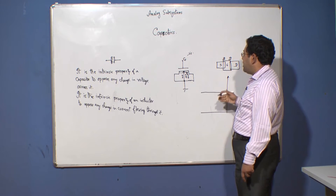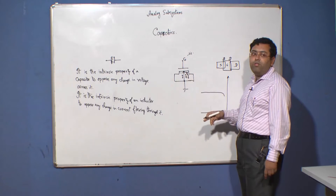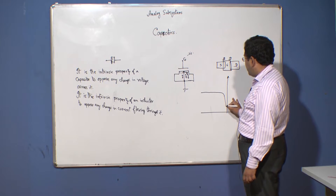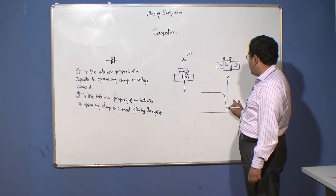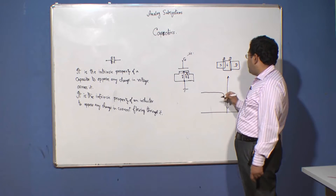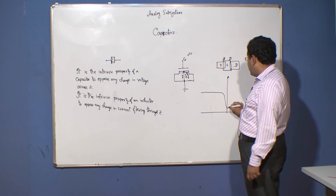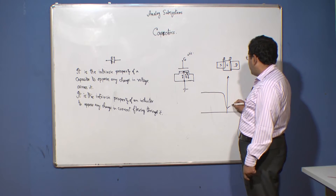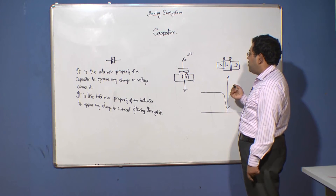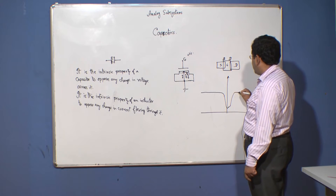As we reduce the negative potential, the attractive force on the holes becomes lesser and lesser, and the number of holes at the oxide-substrate interface decreases. At a particular potential called the flat band voltage, these holes are lost. As we continue increasing the positive potential, the depletion region grows thicker and thicker, and at a particular potential called the threshold voltage, there is suddenly an accumulation of negative charges at the oxide-substrate interface, causing the capacitance to increase sharply.